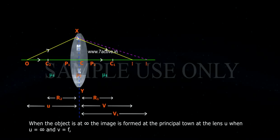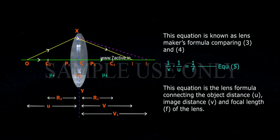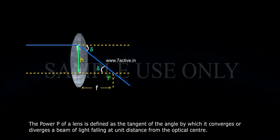When U equals to infinity and V equals to F, therefore 1 by F minus 1 by infinity equals to Mu minus 1 into 1 by R1 minus 1 by R2. 1 by F equals to Mu minus 1 into 1 by R1 minus 1 by R2, equation 4. This equation is the lens formula connecting the object distance U, image distance V, and focal length F of the lens.